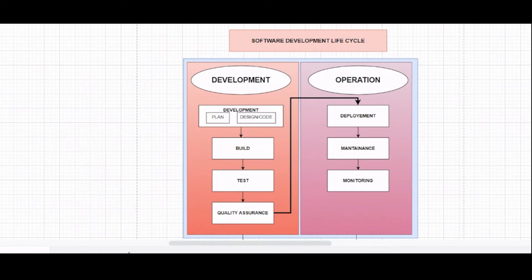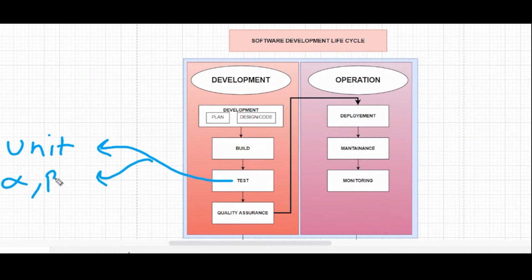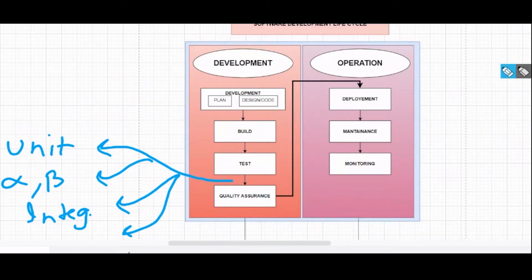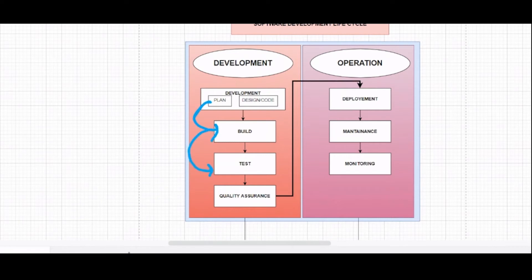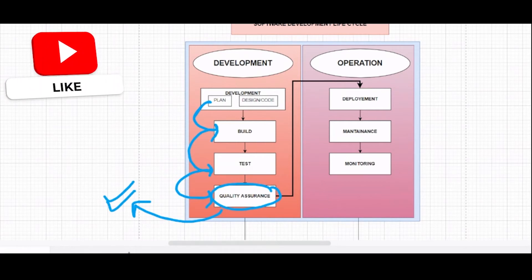Then we move to the testing phase, where many tests are performed — unit testing, alpha testing, beta testing, integration testing, system testing, performance testing, and more. After passing all tests, the software moves to quality assurance, where some employees observe how the website or application is running for a few days. If it's performing well and accepted, it moves forward.